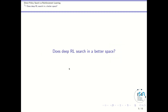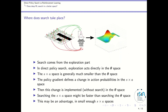Let's start with the first question: does deep reinforcement learning search in a better space? As explained in the third lesson of this playlist, policy gradient performs updates from each state-action pair, moving the theta parameter of the neural network in the performance landscape. So the question is: where does search take place?